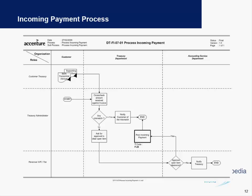For incoming payments, customer treasury roles receive supporting documents from the customer. The treasury department then checks the amounts received from the customer along with the invoices posted in the system. If there are any open items or mismatches, appropriate approvals are required from the treasury department, and an incoming payment is posted in the system. They may also require assistance from the accounting service department to check if there are any open items to be cleared.